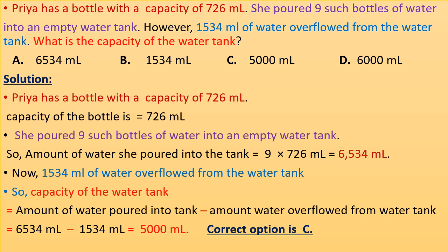First, Priya has a bottle with a capacity of 726 milliliters. She poured 9 such bottles of water into an empty water tank. So, the amount of water she poured into the tank is 9 × 726 milliliters = 6534 milliliters. Now, 1534 milliliters of water overflowed from the water tank. So, capacity of the water tank = amount of water poured into the tank minus amount of water overflowed = 6534 milliliters − 1534 milliliters = 5000 milliliters.